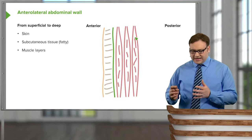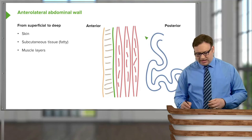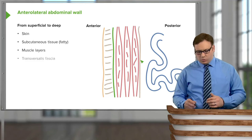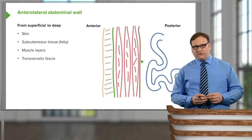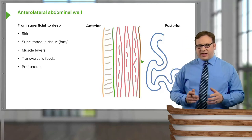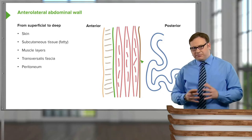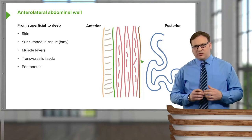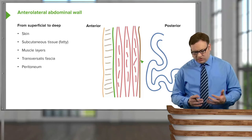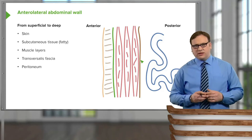Deep again, before we get into the viscera of the abdominal cavity and the gastrointestinal tract, we have a couple of layers called transversalis fascia — an important layer when we look at the inguinal canal. And then finally the peritoneum, which we'll talk about in detail in subsequent lectures. So this is the basic outline of a section through the abdominal wall from superficial to deep: fat, skin, muscles, and important membranes before we get into the viscera.